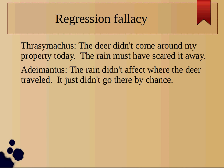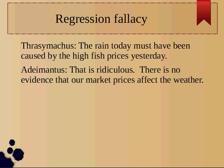Now, the rain might have had some small effect on it, but just because it rains doesn't mean the deer won't come around. This is once again a regression fallacy, because Thrusimica is assigning a cause to an event when he shouldn't be. That may or may not have been a cause, but there's not a good reason for him to think there is.